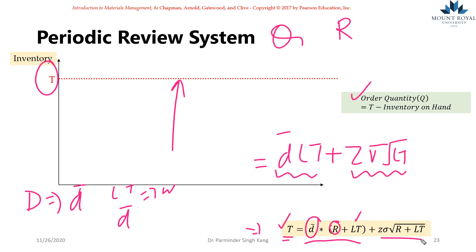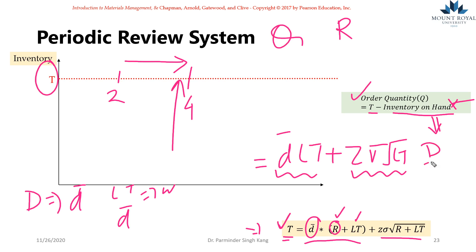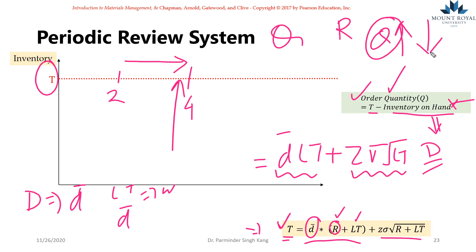The reason we include the review period is: if you place an order on week two, the next order can only be placed on week four, so you need to account for demand during that future review period as well. Once you know the target level T, the ordering quantity Q is T minus inventory on hand. If demand is high, inventory on hand is lower, so Q will be relatively higher. If demand is low, you have more inventory on hand, and Q will be relatively smaller.